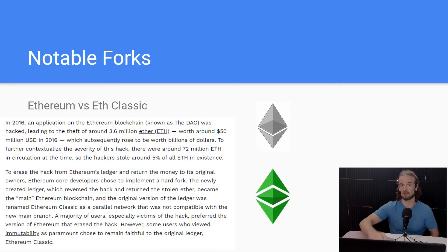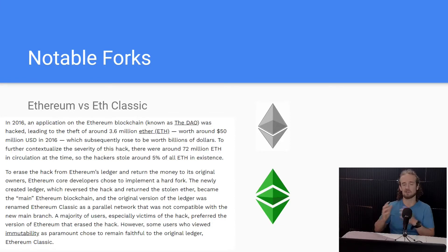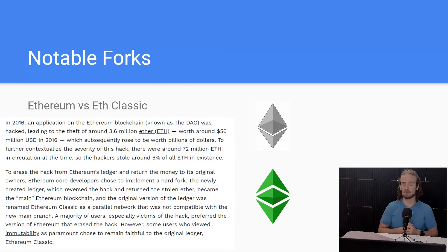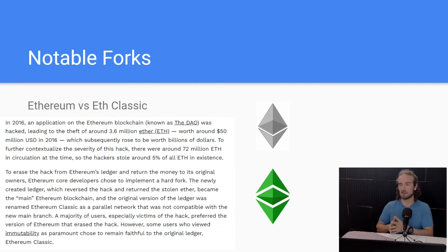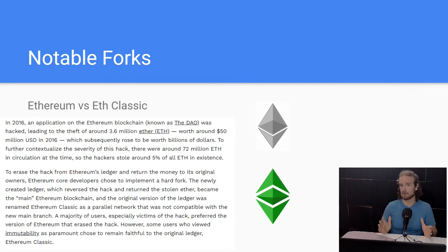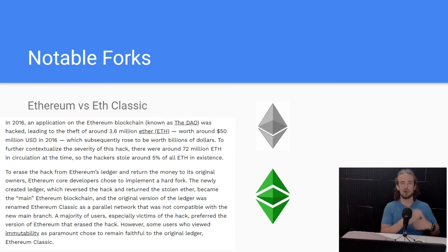The first example is Ethereum versus Ethereum Classic, and for this we've got to go back to 2016. There was an organization known as the DAO — basically, they were hacked. The first group said they were hacked, it's not cool, but it happened and we can't change the blockchain. Because the entire point of a blockchain is an immutable public ledger — once something is put on the blockchain, it's not supposed to be reversed. These people said it's terrible that this hack happened, but it's more important to preserve this protocol than to go back and undo it.